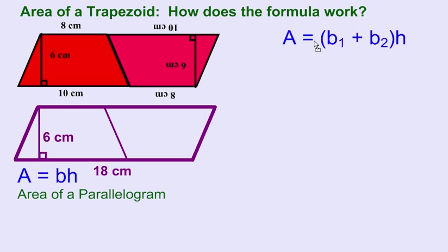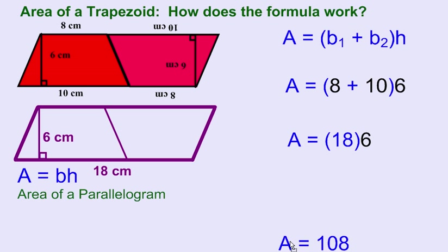We're going to do this with a little more expanded form here. We're going to add the 10 and the 8 to get the sum of our bases, which is 18, and then we're going to multiply by the height, which is 6, and again that gives us an area of 108 for the purple parallelogram.